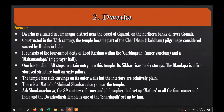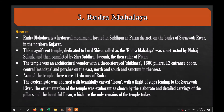Next, Rudra Mahalaya. Rudra Mahalaya is a historical monument located in Siddhpur in Patan district, on the bank of the Saraswati river in northern Gujarat. This magnificent temple dedicated to Lord Shiva was constructed by Mulraj Solanki and then completed by Siddharaj Jayasinh, the then ruler of Patan. The temple was an architectural wonder with a three-storeyed shikhara, sixteen hundred pillars, twelve entrance doors, a central mandap, and porches on the east, north and south, and sanctums in the west.